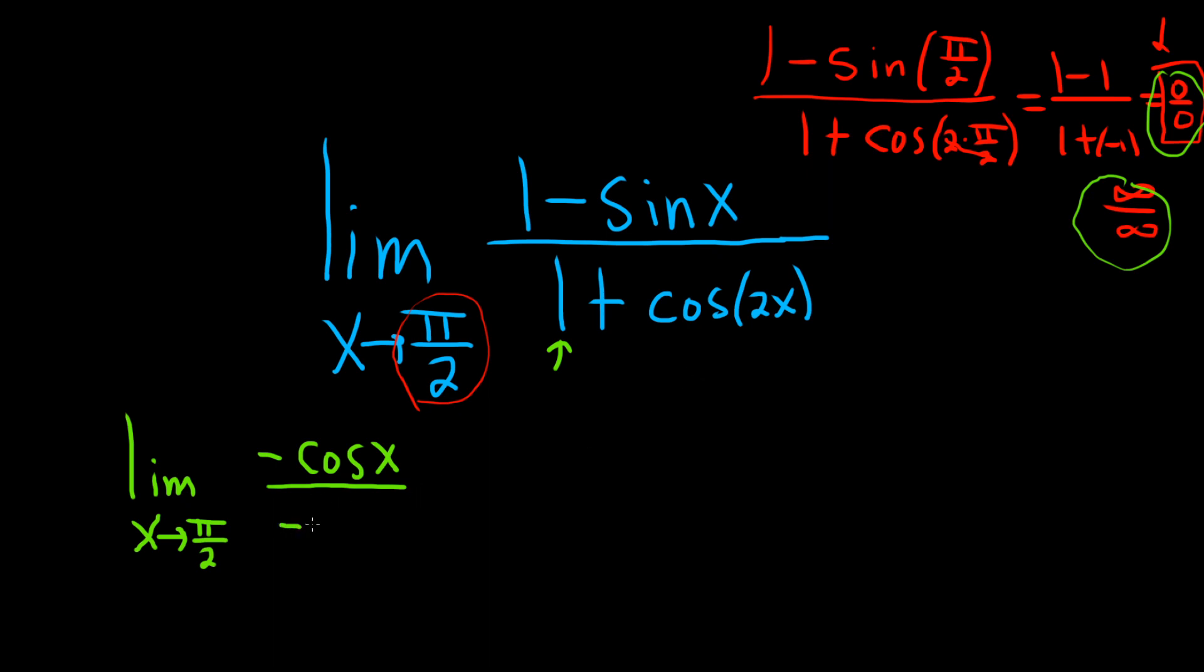The derivative of cosine is negative sine, except here it's cosine of 2x, so we have to use the chain rule. So it will be negative sine of 2x and then times the derivative of the inside function. The inside function here is 2x so its derivative is 2.